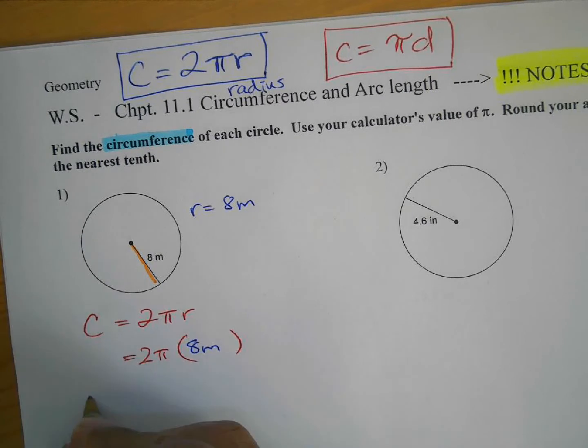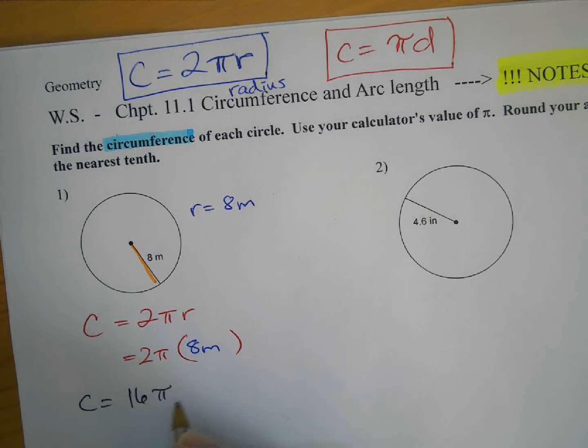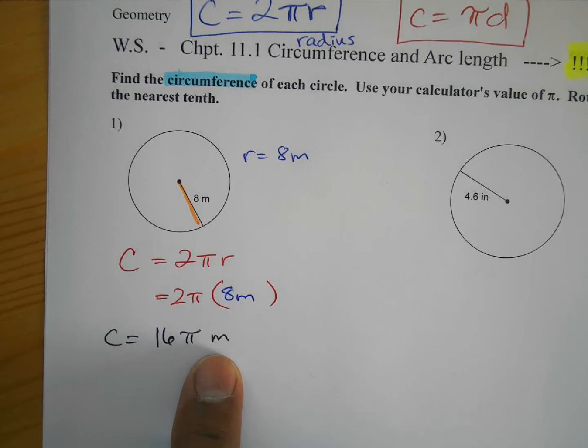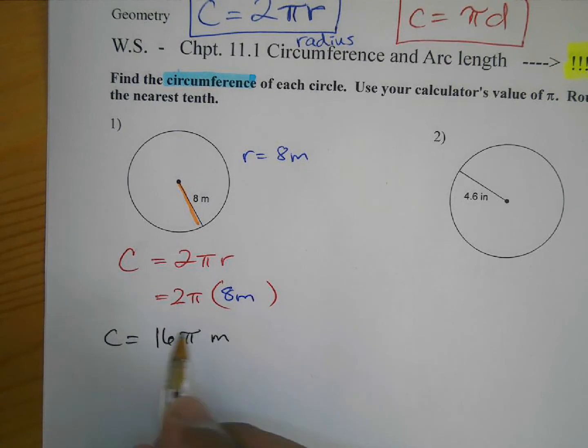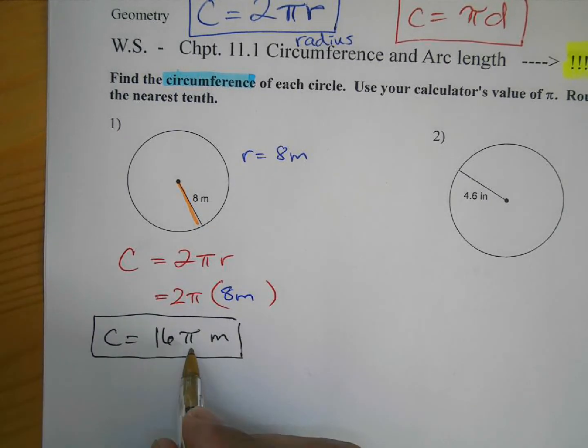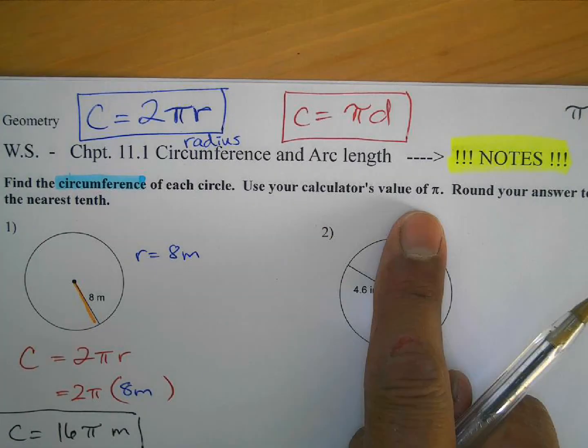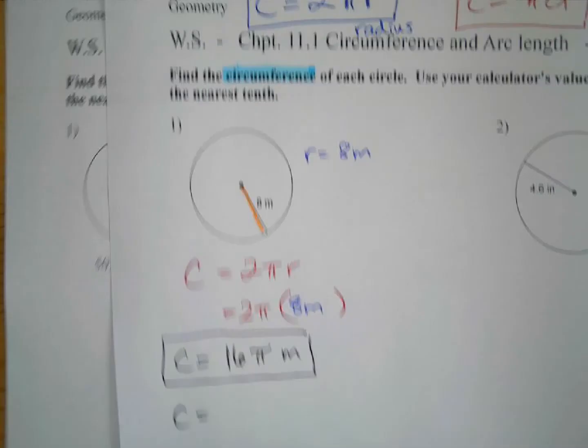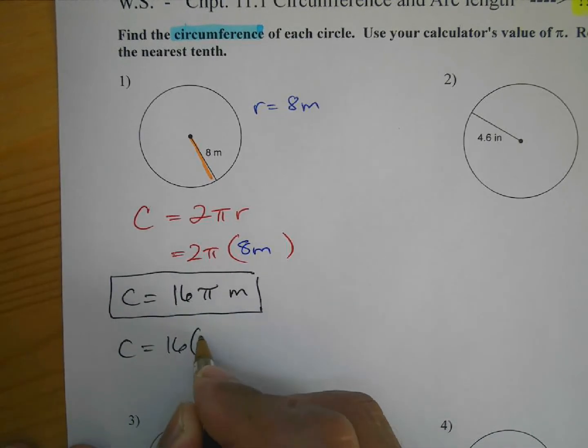Okay, so here our circumference is what? Well, it's going to be 2 times 8, 16 pi, and then meters. Don't worry about the units. It could sometimes be inches or feet or miles. This is one form of the answer if you leave it with the pi. But if you leave it in the other form and we multiply, and it does say, use your calculator's value of pi. So round your answers to the nearest tenth.